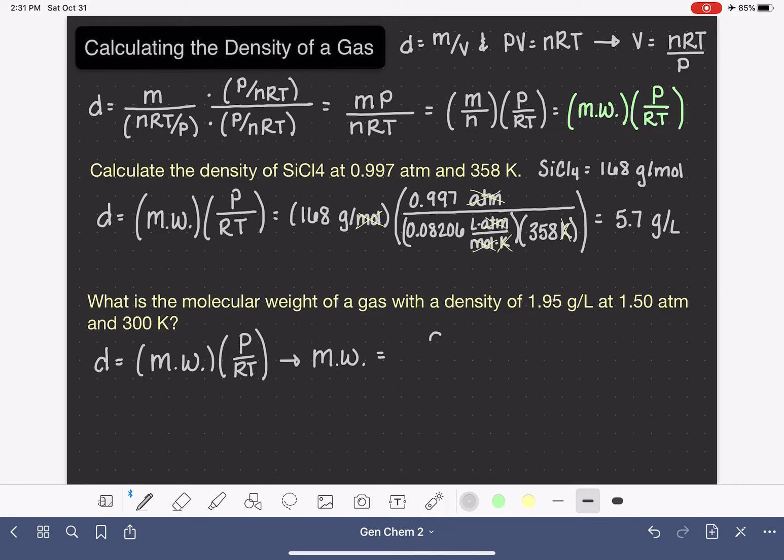And that is going to be density over P over RT. I'm getting that by dividing both sides by P over RT. So this is a fraction with a fraction. We're going to have to be really careful when we set this up, and also when we enter it into our calculator.